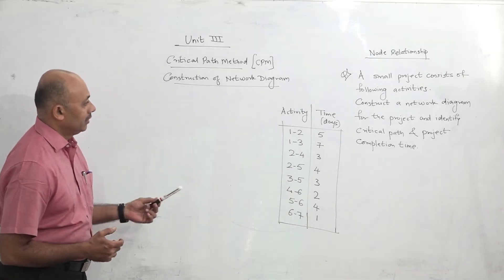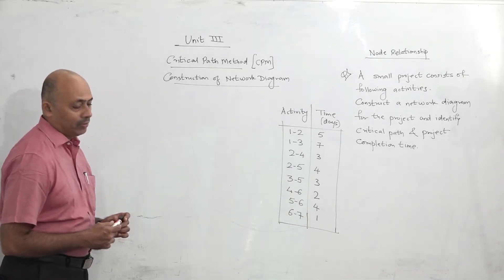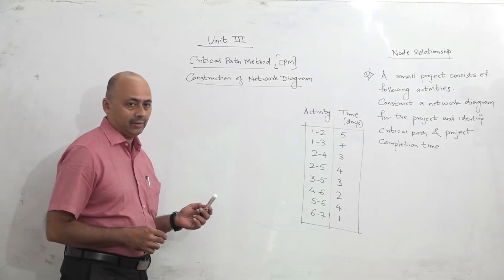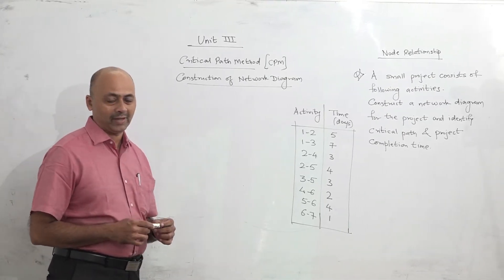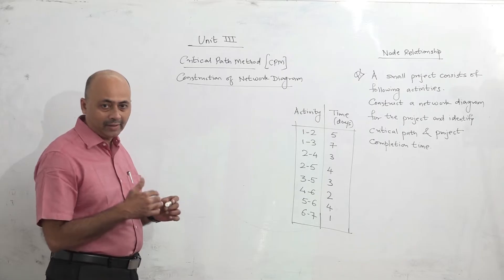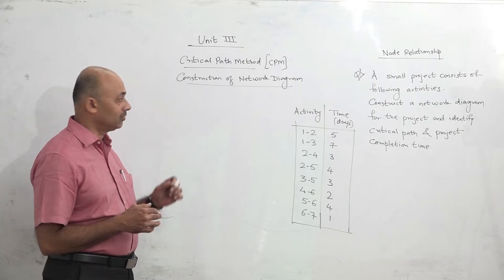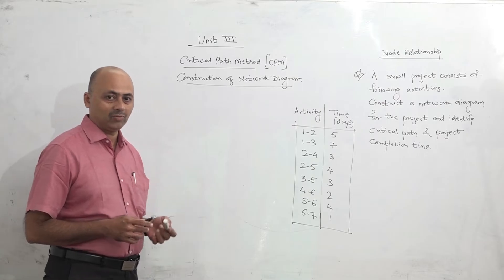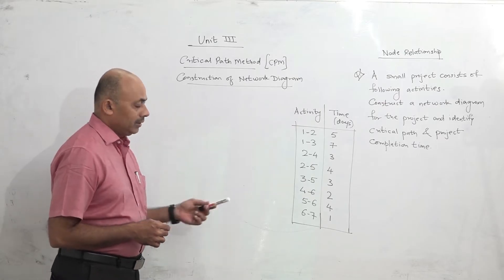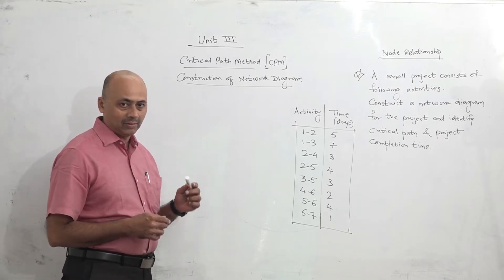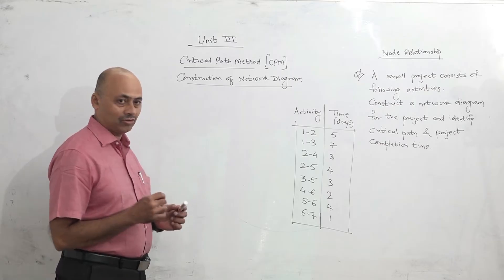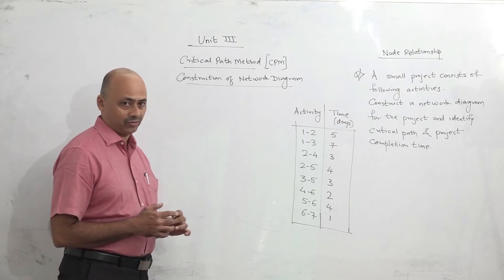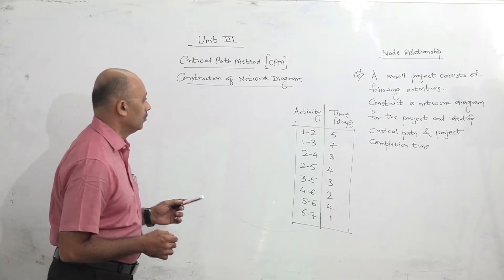In this video, we are going to see how to construct a network diagram. Unit number three is related with network analysis. It contains three topics: CPM, that is critical path method, then project crashing, and the last topic is PERT. For all three topics, the basic requirement is construction of a network diagram. So first of all, we should learn how to construct a network diagram.